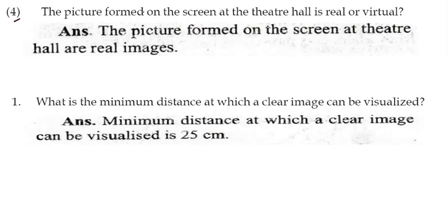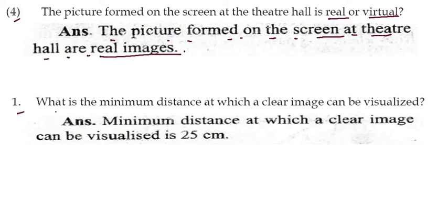The picture formed on the screen at a theatre hall is a real image. What is the minimum distance at which a clear image can be visualized? This is 25 cm. So the minimum distance at which a clear image can be visualized is 25 cm.